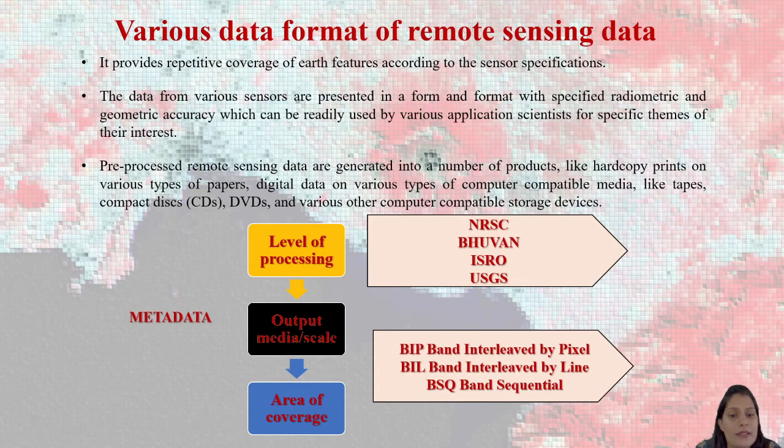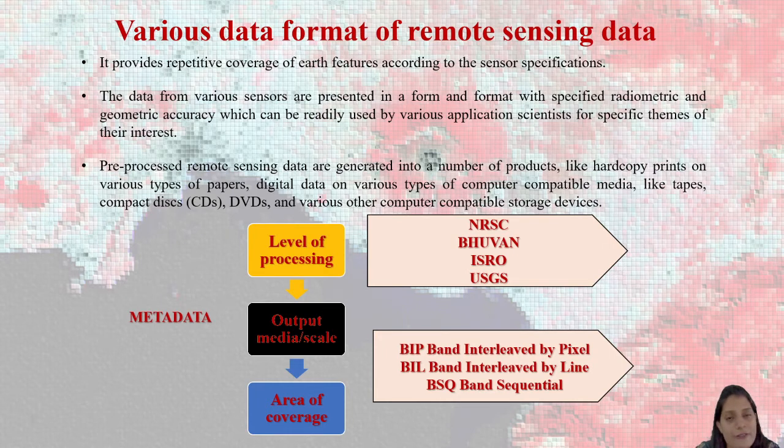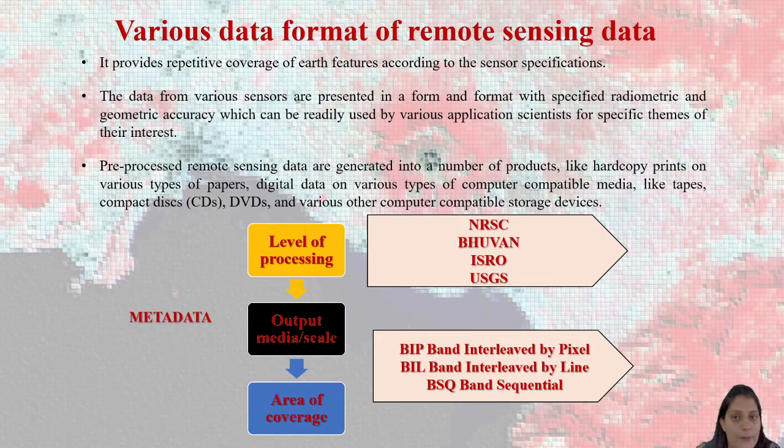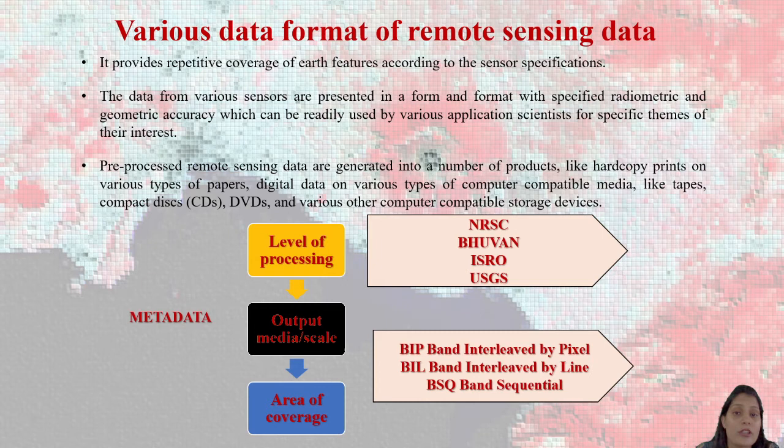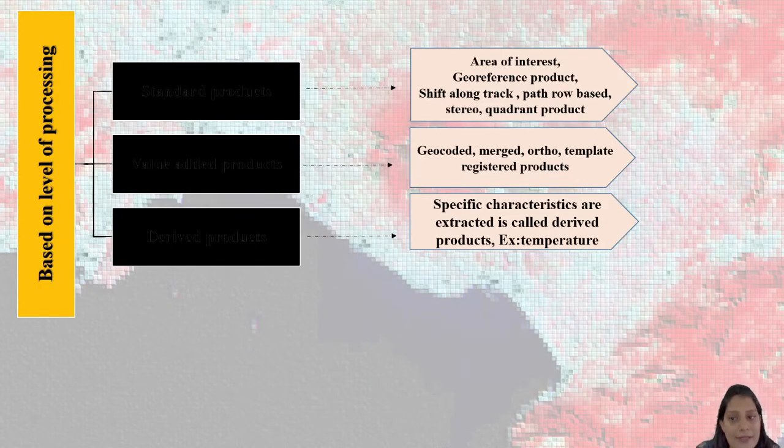Various data formats are basically band interleaved by pixel (BIP), band interleaved by line (BIL), and band sequential (BSQ). These are the three formats in which you can get data. Some sensors give data in band sequential format, some in band interleaved by pixels, meaning more pixel information. Band interleaved by lines gives patchwise information.